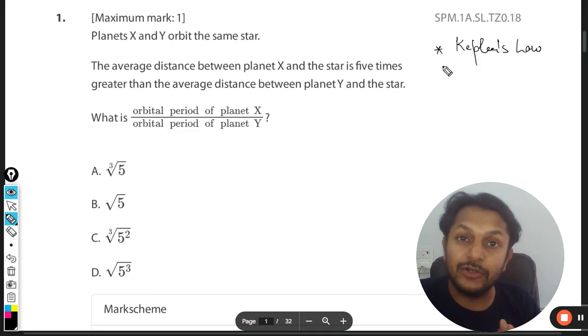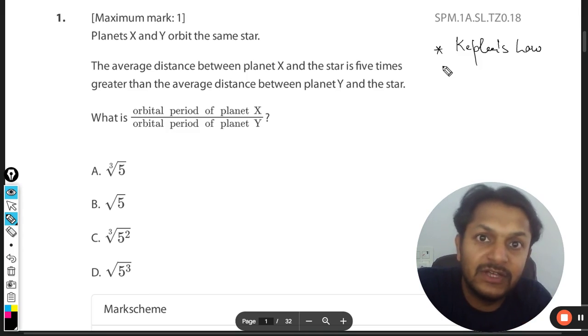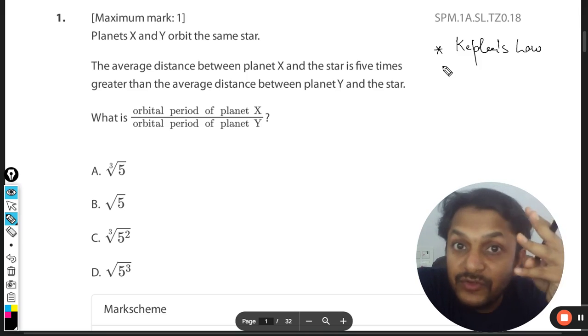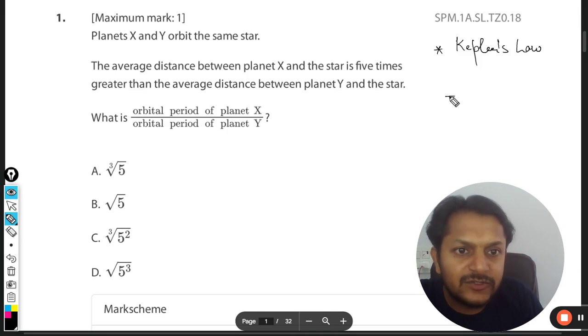There are three Kepler's laws. Kepler's law number one is that all the orbits of the planet around the sun are elliptical. Point number two is about the velocity of the planets, so we would be discussing it later. Point number three, which is important for this particular question, is that the square of the time period is directly proportional to a cube, where a is the semi-major axis of the orbit.